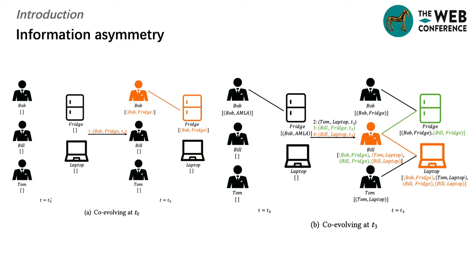In figure B, under the update rules of the existing model, at time 3, the Fridge node does not hold the interaction information, since its user Bill has traded the laptop, but the laptop node holds all the recent interaction information of the Fridge node. At time 3, the non-interaction information held by the Fridge node and the laptop node is asymmetric.